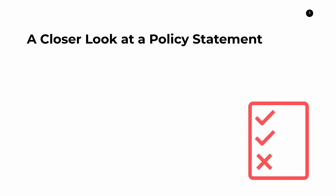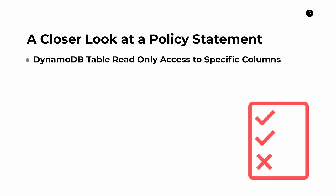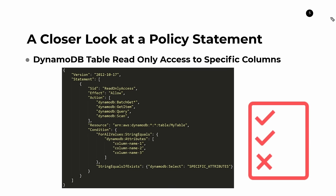Now let's take a closer look at a policy document — the terms policy statement and policy document are generally used interchangeably. Let's look at one that gives DynamoDB read-only access to specific columns. So, ignoring the right side for now, we see effect: allow, which is good. We have some actions: batch_get* — by the way, you can put asterisks as wildcards. So batch_get* might encompass multiple actions like batch_get_item, batch_get_something_else. It's a shorthand notation.